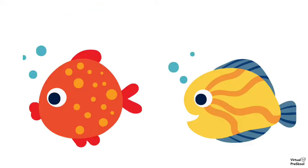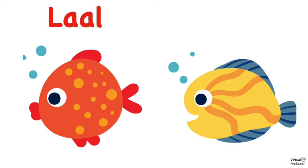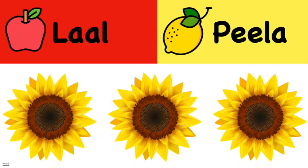Let's do those again. Red is Lal and yellow is Pila. So let's do some practice problems. What color flowers do you see? Lal or Pila?